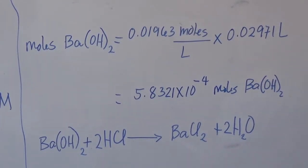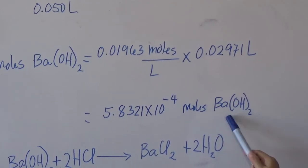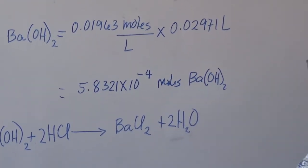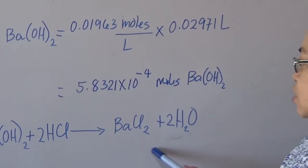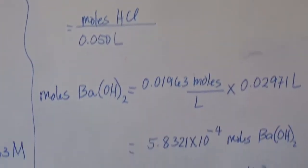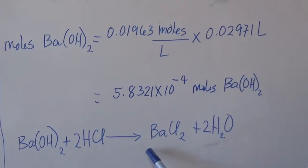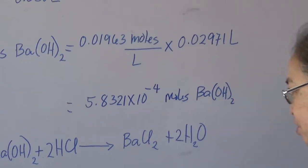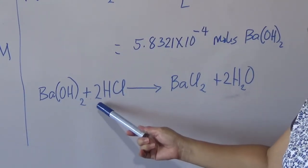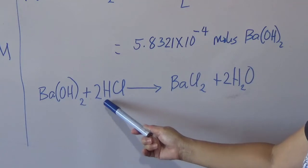Next, we identify the amount of HCl that will react with 5.8321 × 10⁻⁴ moles of barium hydroxide. We need the stoichiometric relationship between barium hydroxide and hydrochloric acid, so we write the neutralization reaction: barium hydroxide reacts with hydrochloric acid to produce barium chloride and water. After balancing the equation, the ratio of barium hydroxide to hydrochloric acid is 1 to 2.